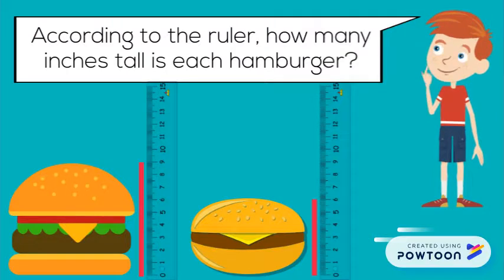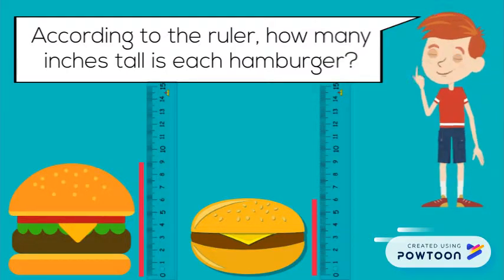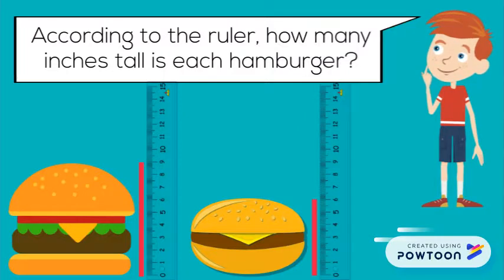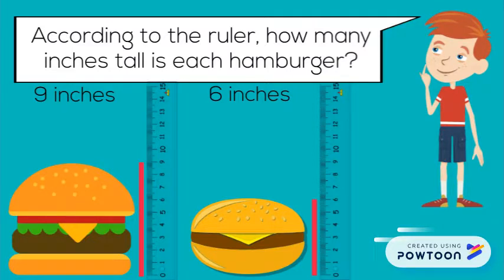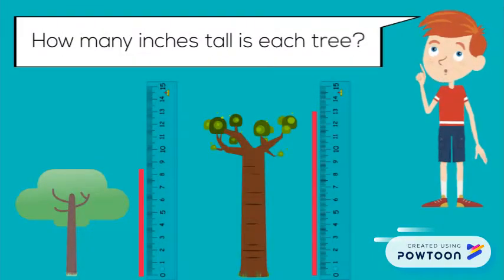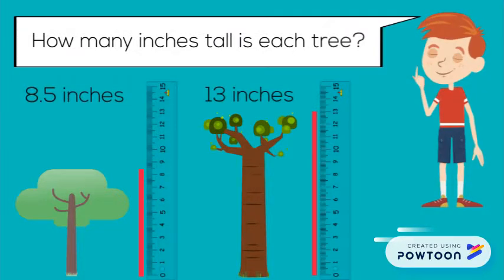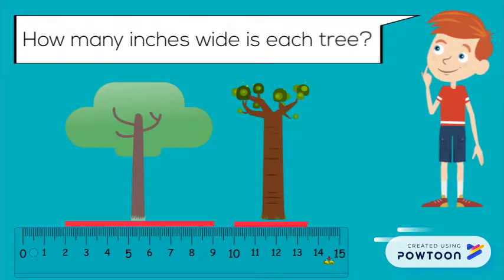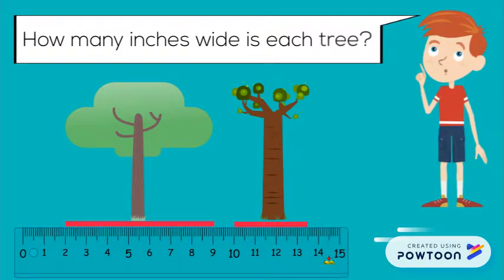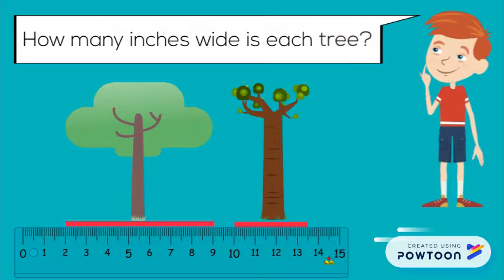According to the ruler, how many inches tall is each hamburger? Nine inches and six inches. How many inches tall is each tree? Eight and a half inches and 13 inches. How many inches wide is each tree? Seven inches and three and a half inches.